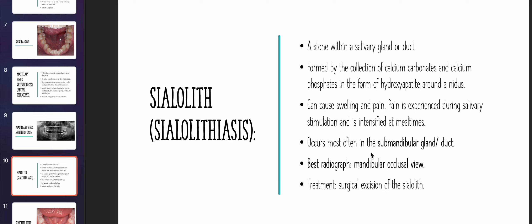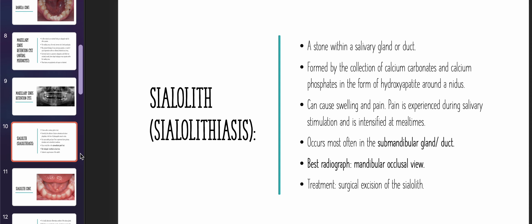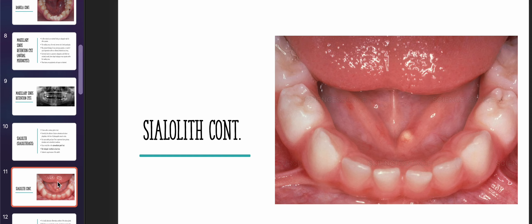Sialolithiasis occurs more often in the submandibular gland and duct. The best radiograph for detection, if asked in the exam, is the mandibular occlusal view. Treatment is surgical excision of the stone. This is how a stone looks when visible in the floor of the mouth.